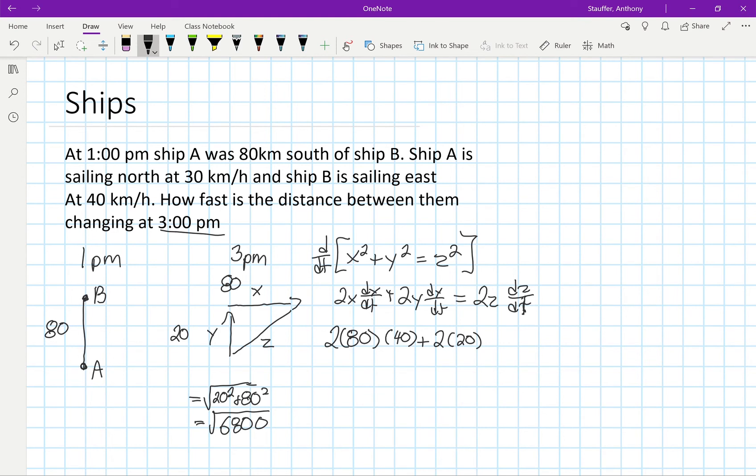Now the dy/dt is going to get a bit trickier because it's negative 30. Why is it negative 30 as opposed to positive 30? Because what's happening is it's decreasing the distance. As it's going upwards, it's decreasing the distance between B and A, so we put it in as a negative value. So I get 2(80)(40) + 2(20)(-30) equals 2 multiplied by the root of 6800.